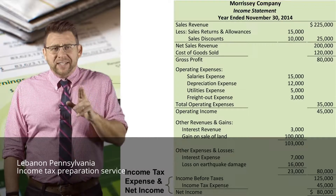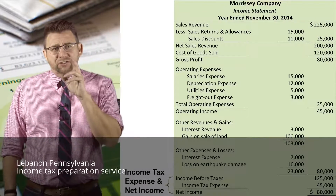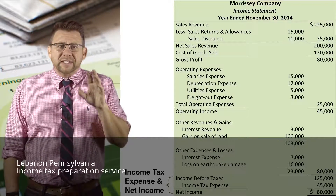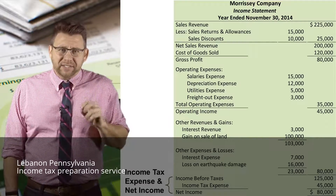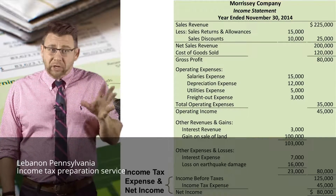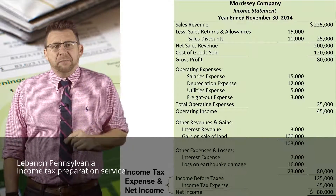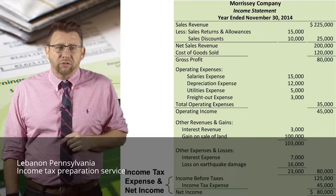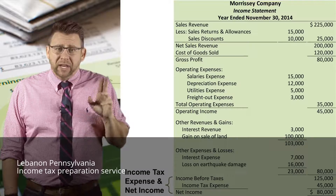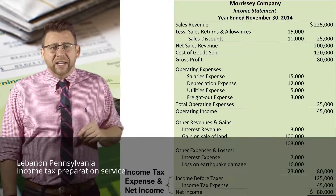The final section before we arrive at net income — at least for an accounting principles course — is the income tax expense section. This expense is reported separately from all other expenses because it's the expense that managers have the least control over. Income tax expense is deducted from income before taxes to arrive at net income.